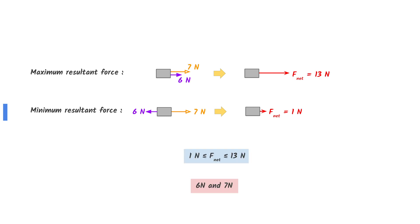6 newtons and 7 newtons of forces can produce a maximum resultant force of 13 newtons and a minimum resultant force of 1 newton. 12 newtons lies in between these values, therefore the answer is 6 and 7 newtons.